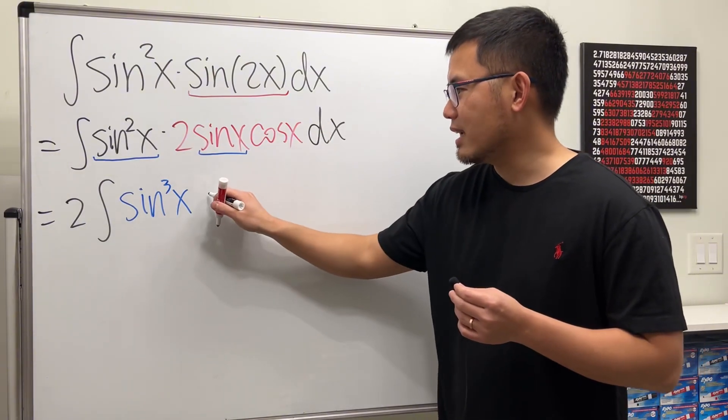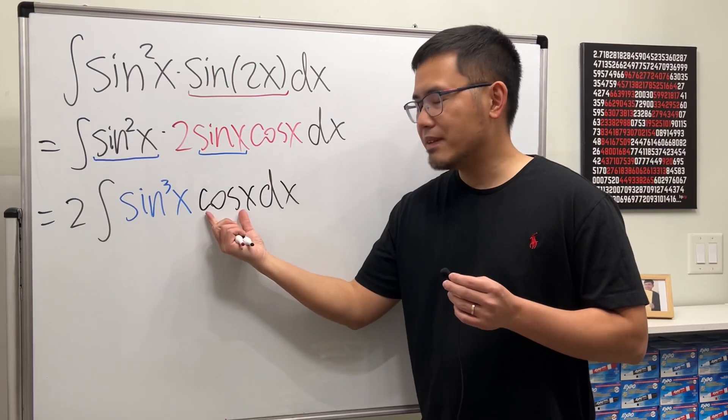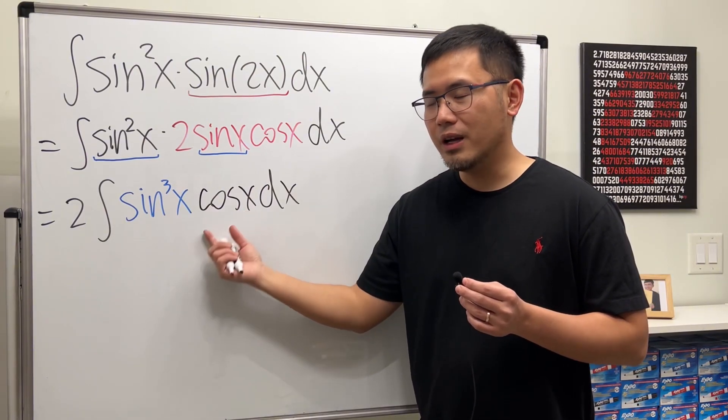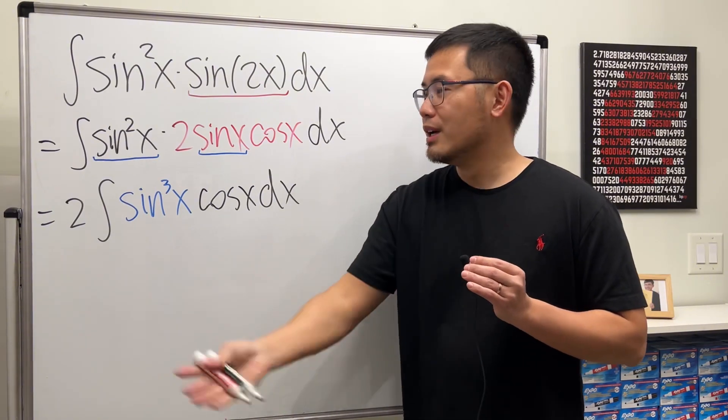we still have this cosine x right here. As we can see, we have a cosine x factor right here. And this right here means we have sin x in the parentheses and then raised to the third power.